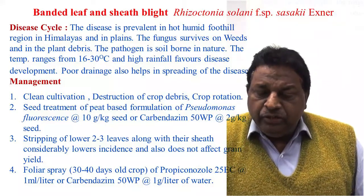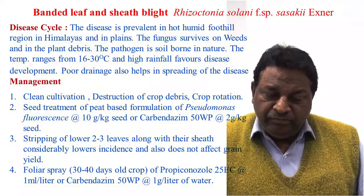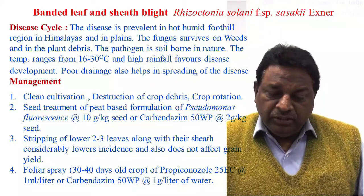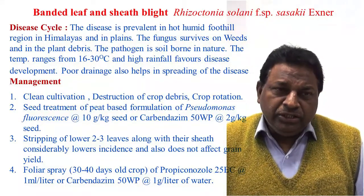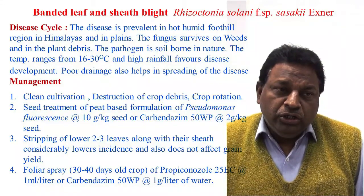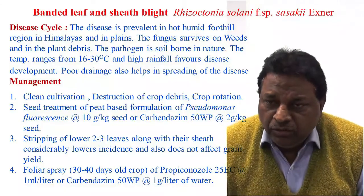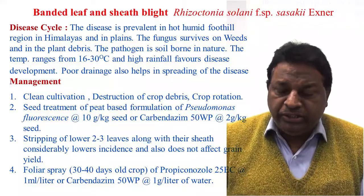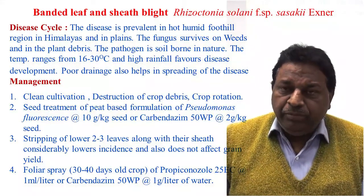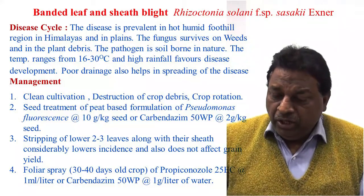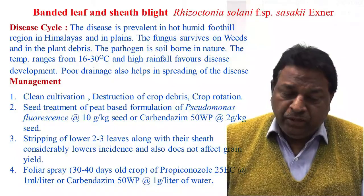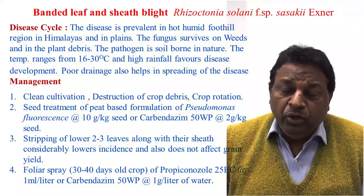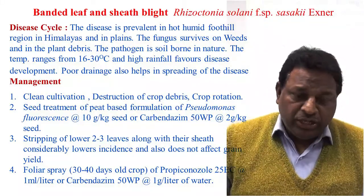The fungus survives on weeds and in plant debris. This disease is soil-borne in nature. Heavy rainfall increases the chances of spreading of the disease. Temperature ranges up to 30 degrees Celsius, and high humidity and heavy rainfall favor development of the disease. Poor drainage also helps in spreading of the disease.